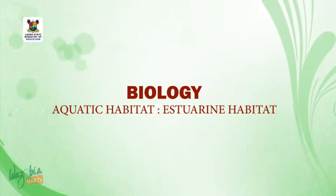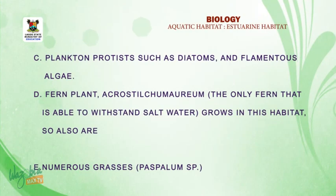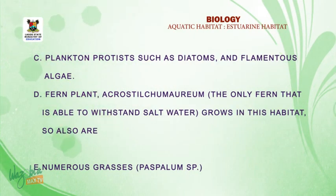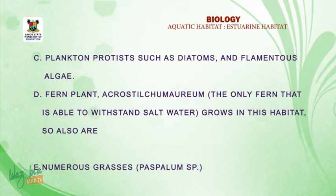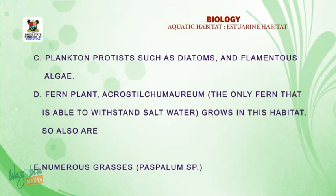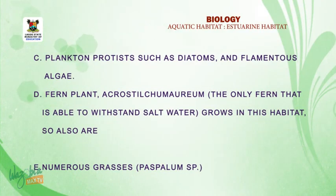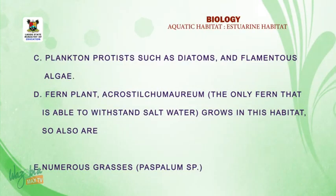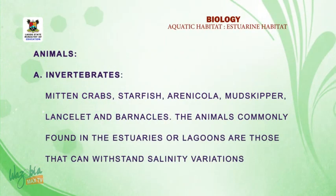Welcome back. More examples of plants found in an estuary: plankton — microscopic plants such as diatoms and filamentous algae. Fern plants are also found in the estuary; an example is Acrostichum aureum, the only fern able to withstand salt water. There are also numerous grasses like Paspalum species.